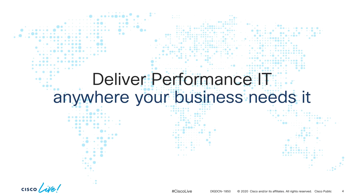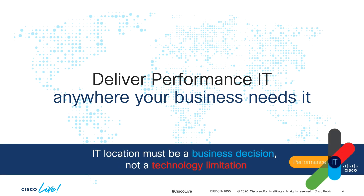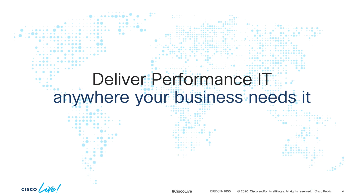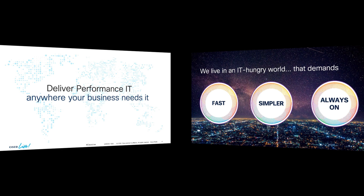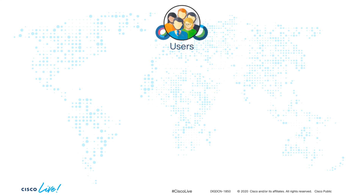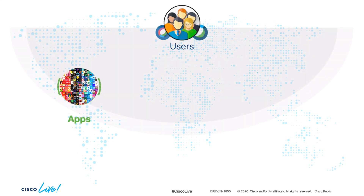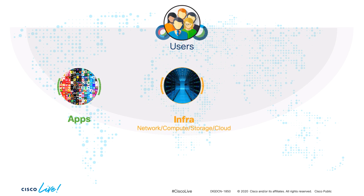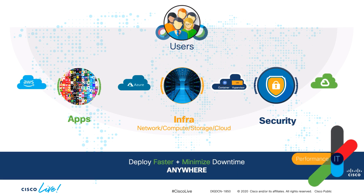We need to provide performant IT anywhere our business needs it — no matter if that means on-premises, on the cloud, virtual, physical, etc. In the end, IT locations should be a business decision and not a technology limitation. We should be able to provide it fast, simpler, and reliable in a consistent manner anywhere. We as Cisco want to make sure that you can connect users to applications anywhere they may be, running on reliable infrastructure that is provisioned as fast as possible in a consistent yet secure way. So no matter which cloud or environment you run on, we want to make sure your IT services have faster time to market and minimize downtime.